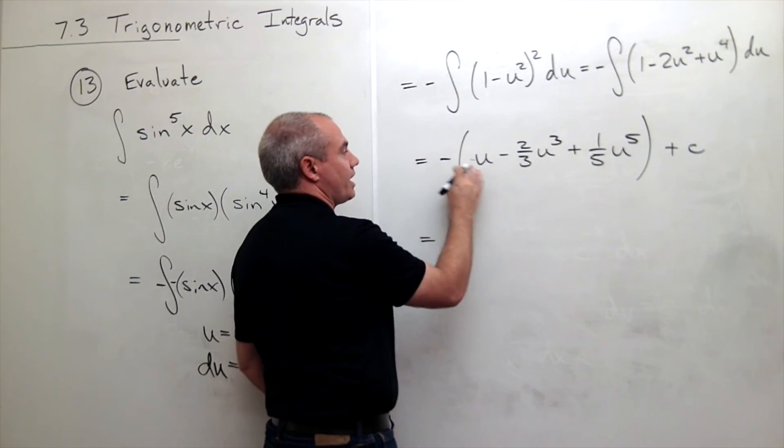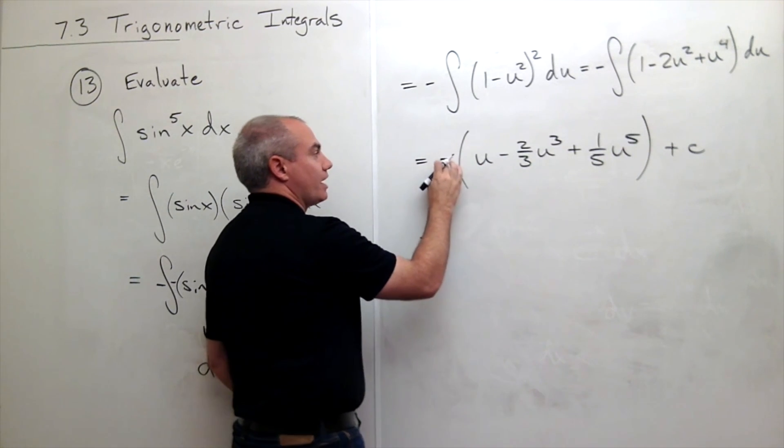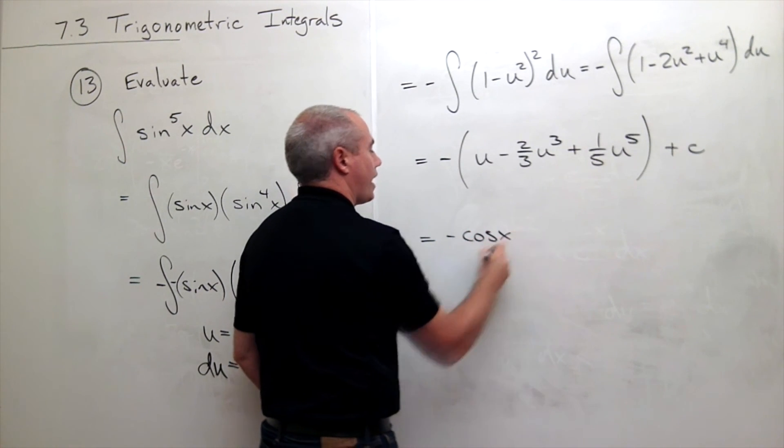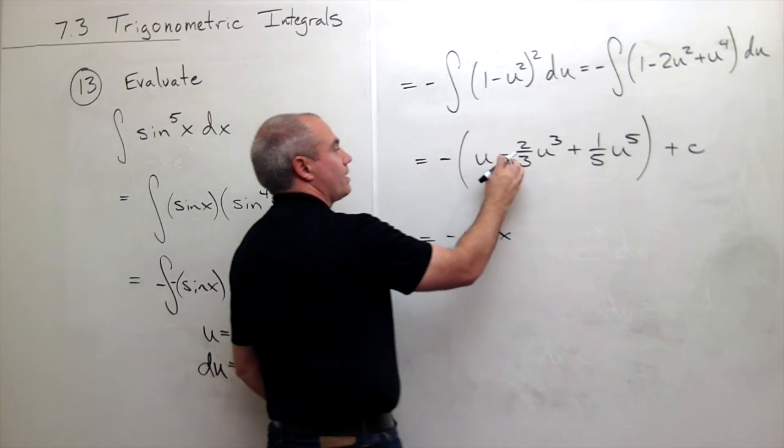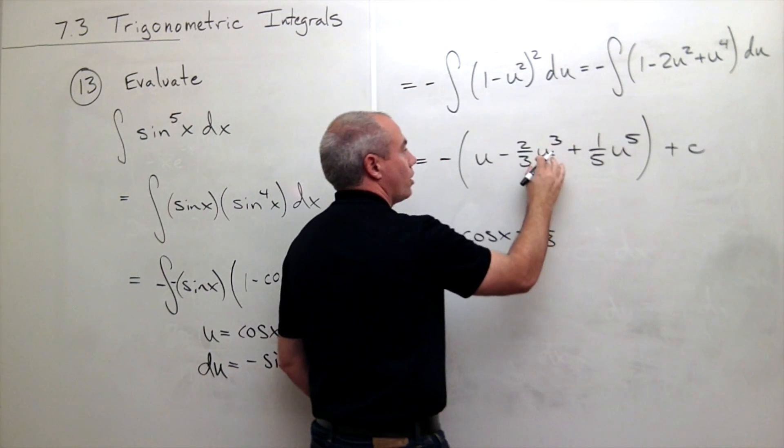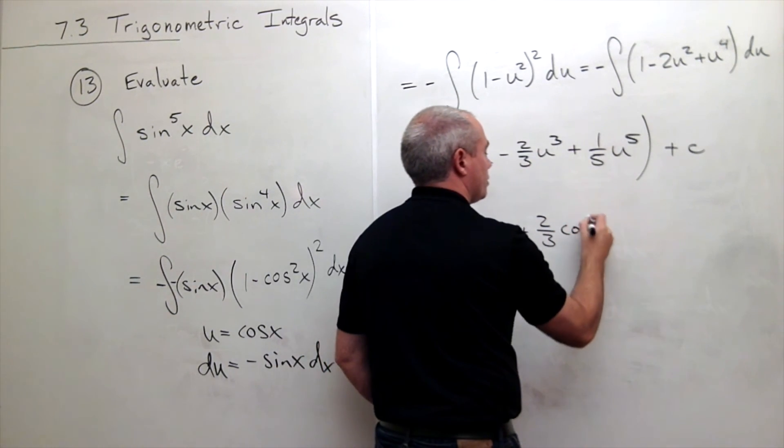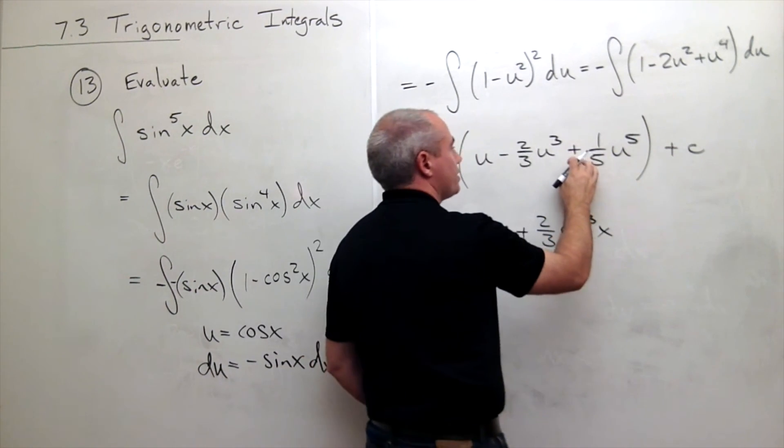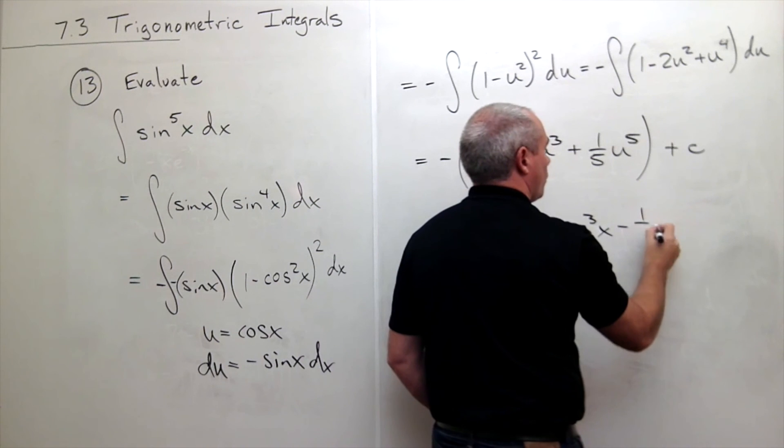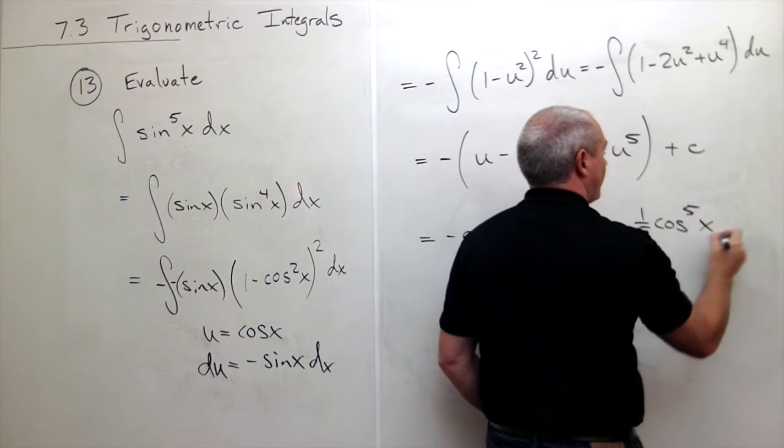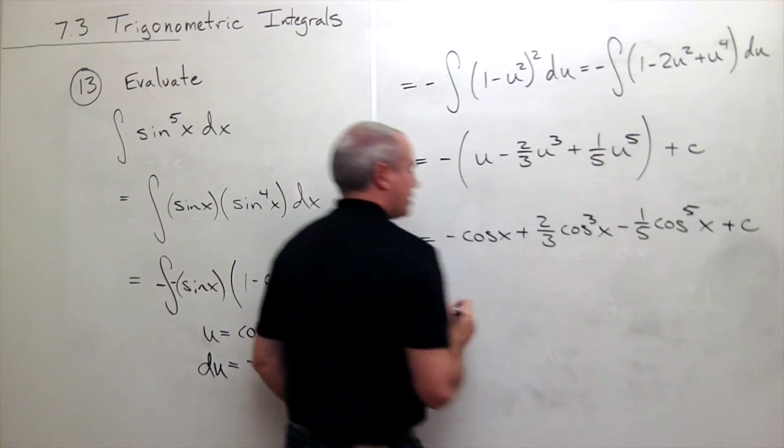I've got a negative times cosine of x, so minus cosine x. I've got a minus times a minus, which is plus two thirds cosine cubed of x. And then I've got a minus times a positive, which is minus one fifth cosine to the fifth of x plus c.